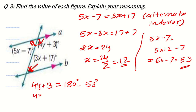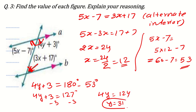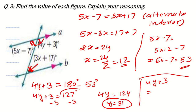Now, 4y plus 3 is on a linear pair with the 53-degree angle, so 4y plus 3 equals 180 minus 53 equals 127. Subtracting 3 from both sides gives 4y equals 124, so y equals 31. After finding the value of y, 4y plus 3 equals 127 degrees. In the exam, be careful whether they are asking for the value of y or the value of the angle.